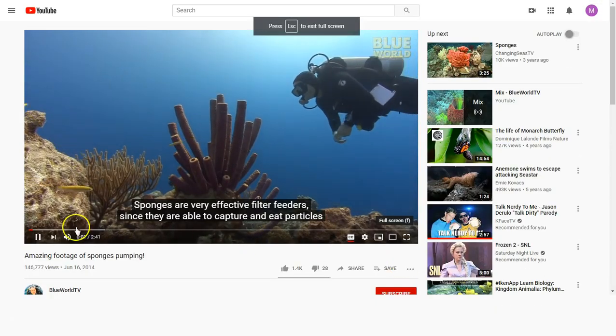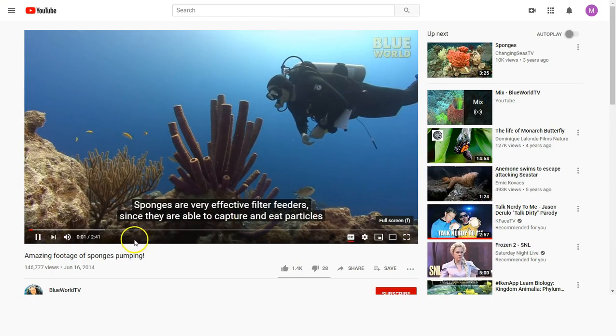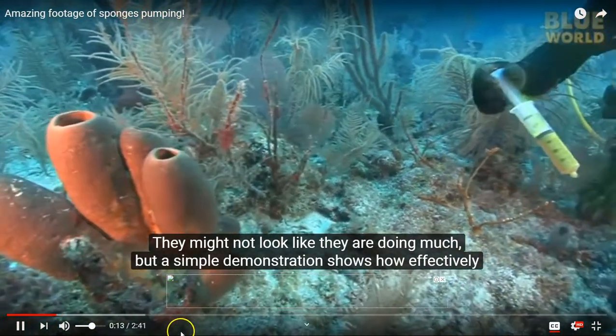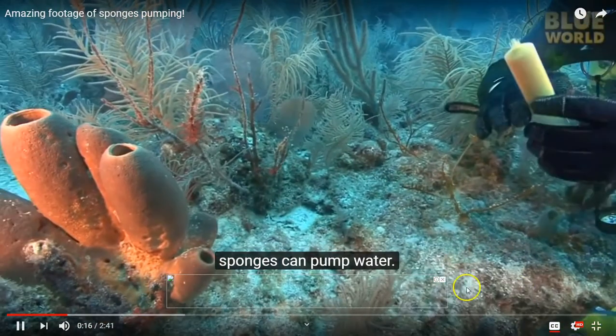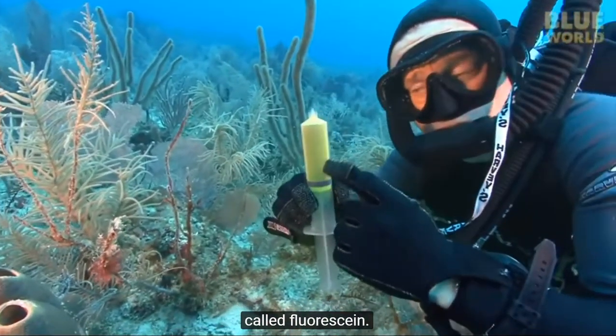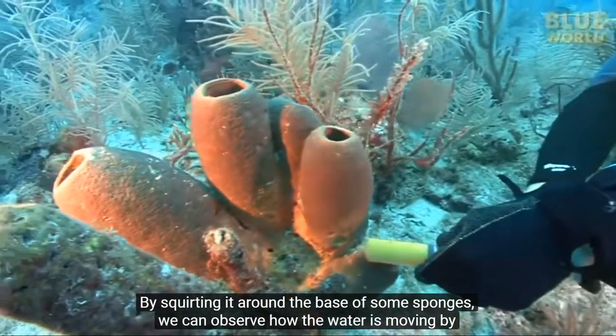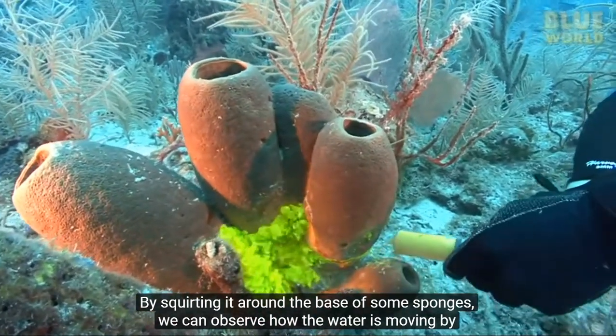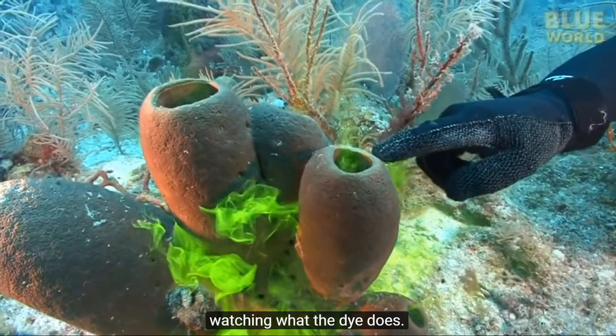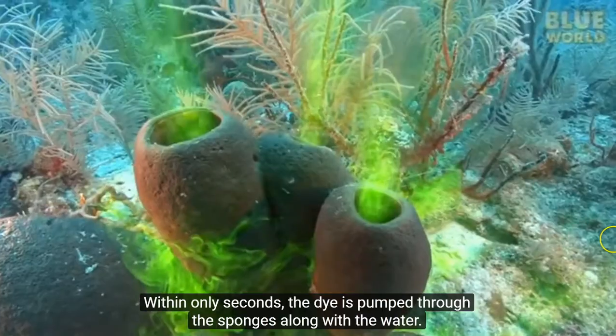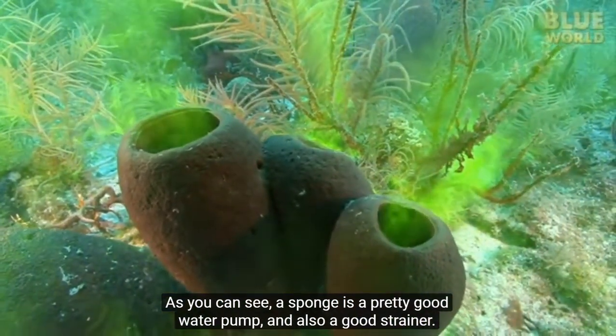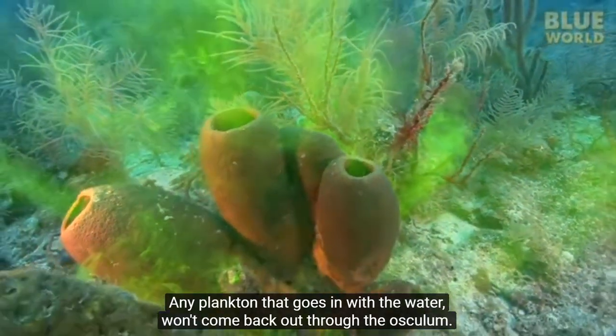Sponges are very effective filter feeders since they're able to capture and eat particles as small as bacteria as well as larger particles. They might not look like they're doing much but a simple demonstration shows how effectively sponges can pump water. On a reef in the Caribbean I make a dive with a syringe filled with a non-toxic dye called fluorescein. By squirting it around the base of some sponges we can observe how the water is moving by watching what the dye does. Within only seconds the dye is pumped through the sponges along with the water. As you can see a sponge is a pretty good water pump and also a good strainer. Any plankton that goes in with the water won't come back out through the osculum.